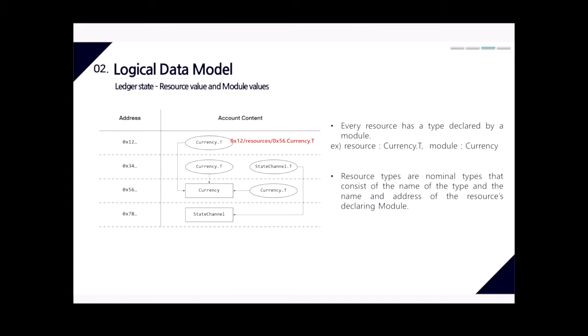A resource is a record that binds named fields to simple or complex values. In the figure, you can see 'currency.t' — here 'currency' is the name of the module and 't' is the name of the resource. In Libra, when you want to access a resource, you can do so using access paths.